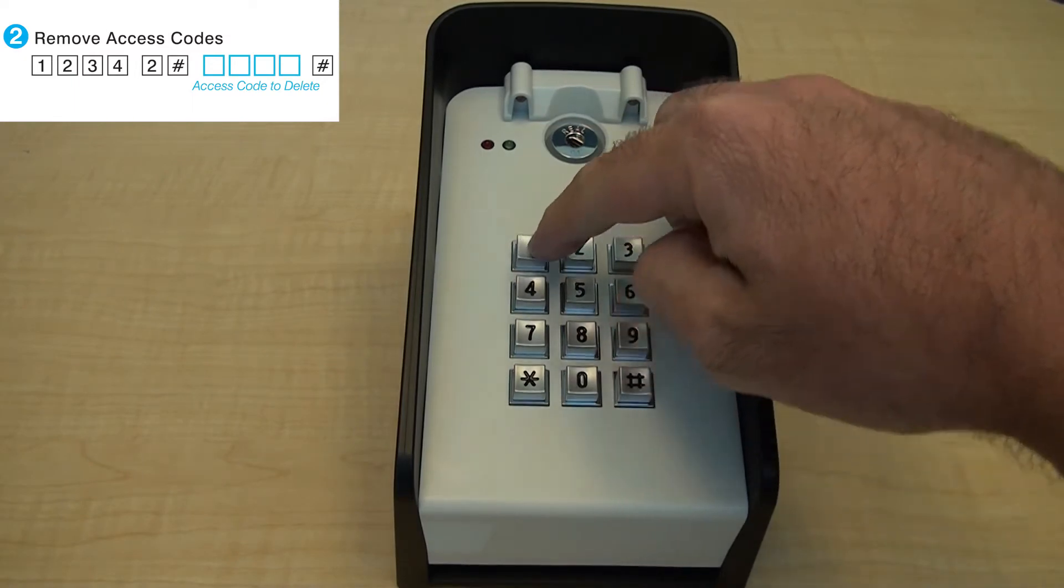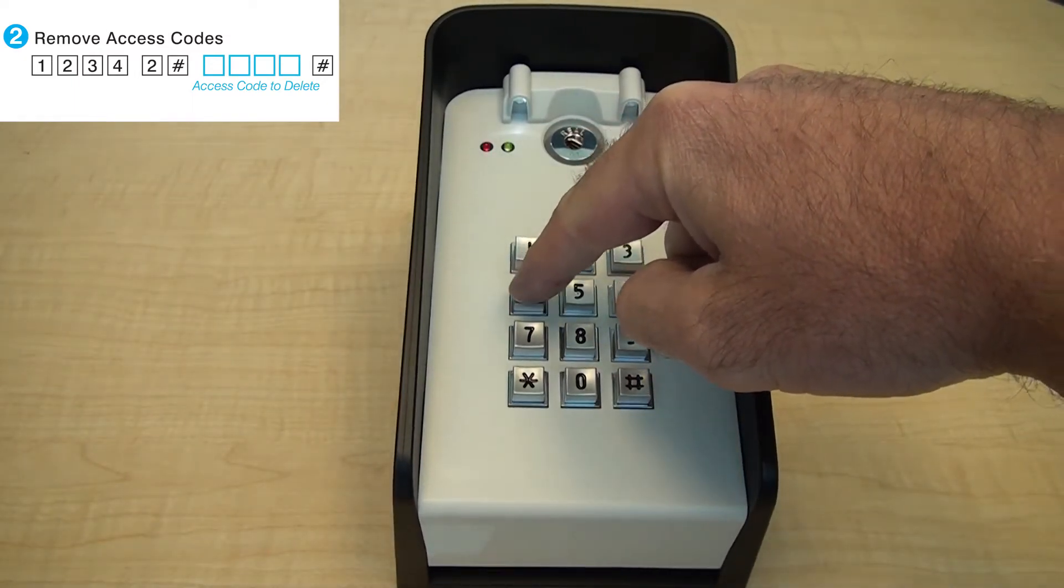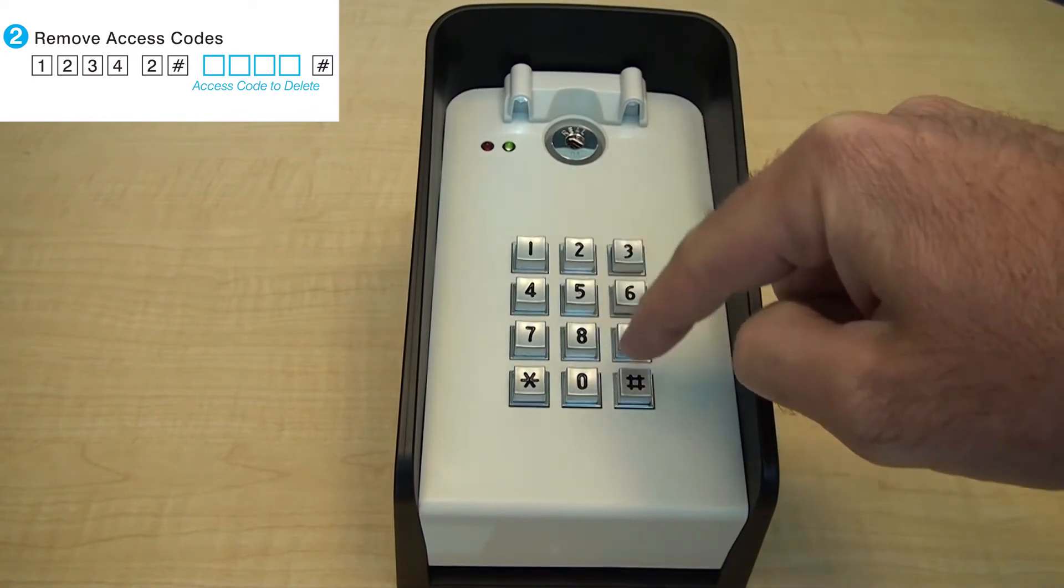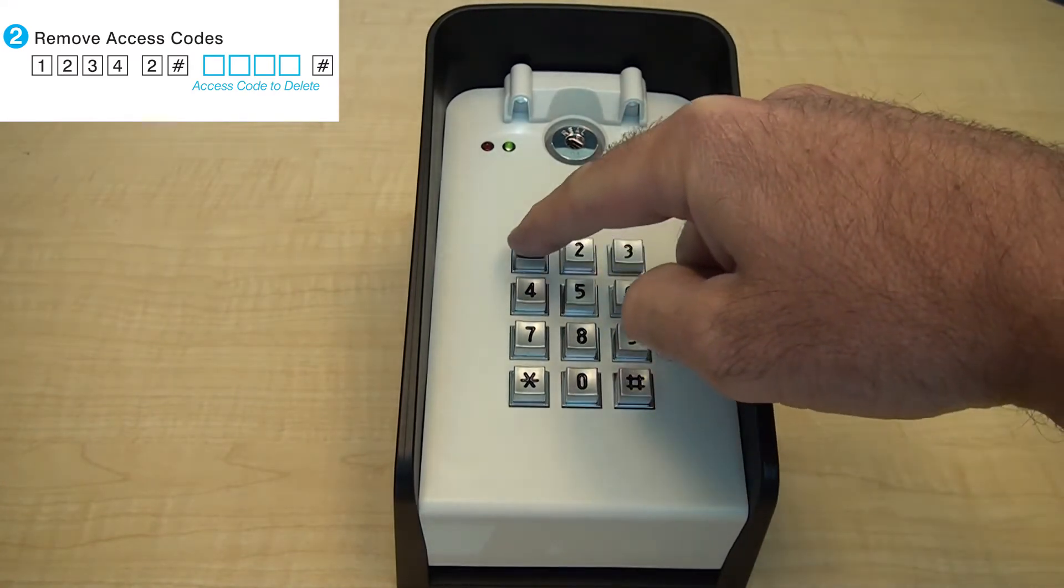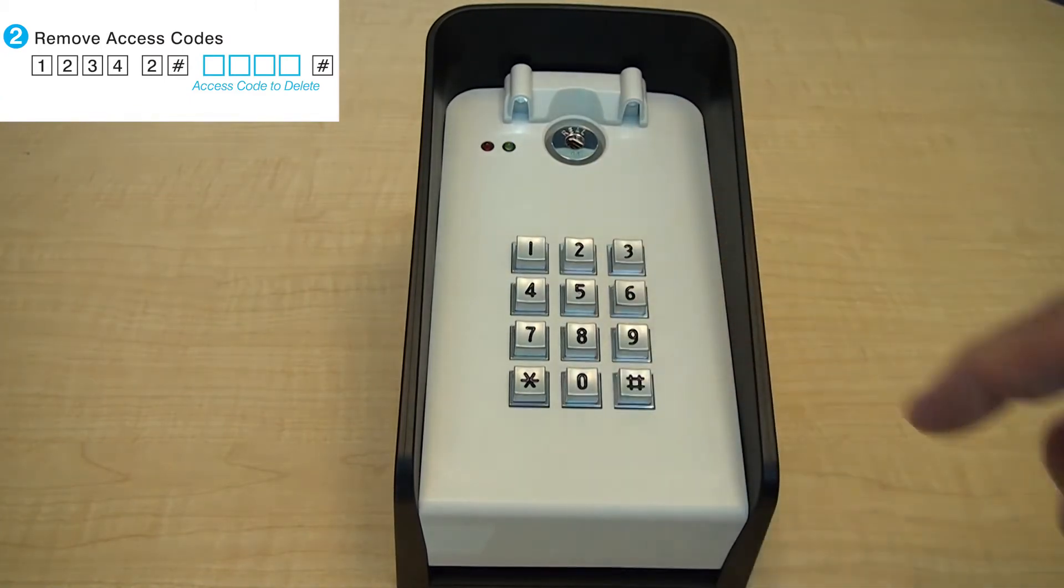To remove an access code, use the master code to first enter programming mode. Press 2 pound to enter the delete function of the keypad. Enter the access code you wish to delete followed by the pound sign.